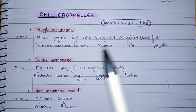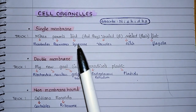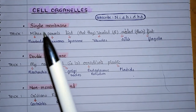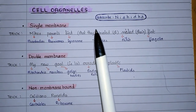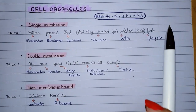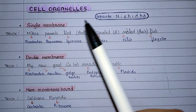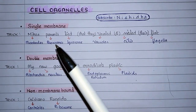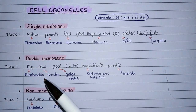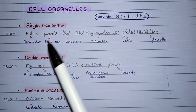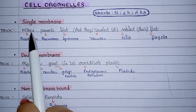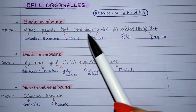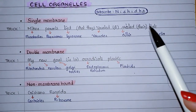The trick to learn this is: Mike's parents lied that they vacated and sealed their flat. I named him as Mike because if I just write 'my parents,' it will get confused whether it is microbodies or mitochondria. That's why I made it as Mike's parents. So M-I-K-E, Mike stands for M-I-C, microbodies. Mike's parents lied that they vacated and sealed their flat.